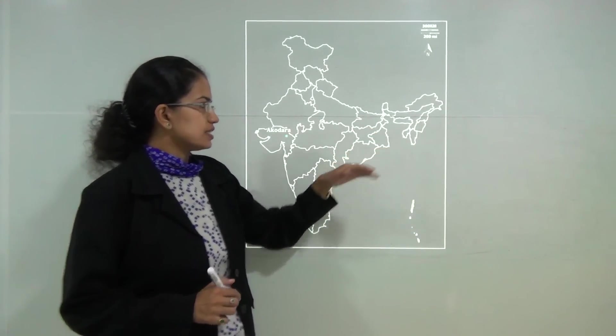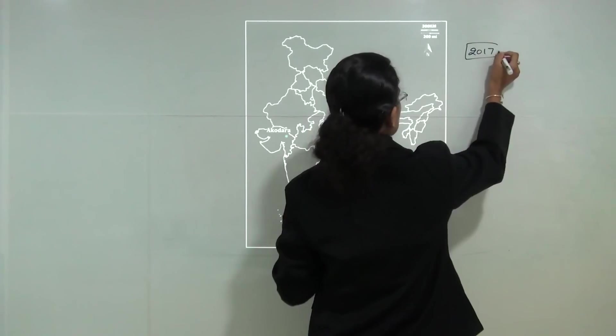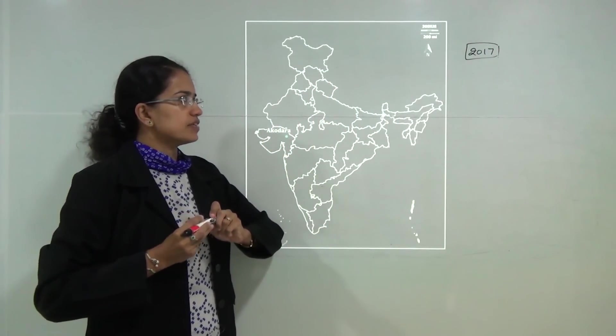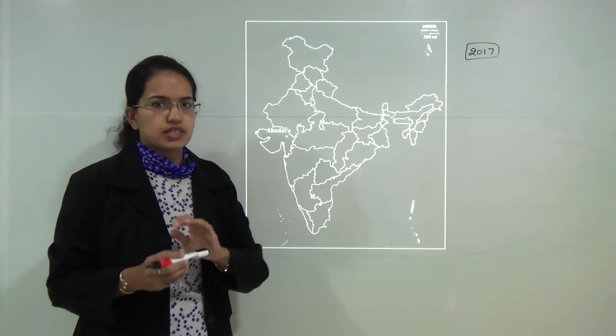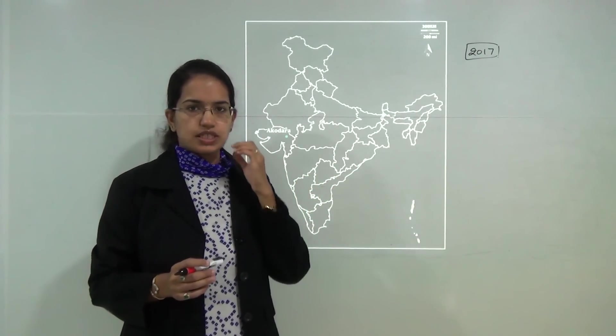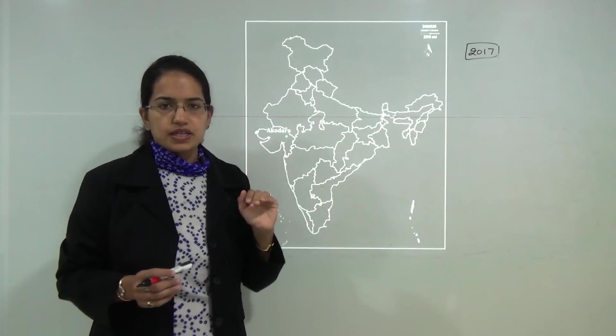We will start again with the map location class. We will be working with the map locations for 2017, covering all the contemporary locations. We have already covered the 2016 contemporary locations in 9 classes. Now, we will move forward with the 2017 IAS main examination important map locations.